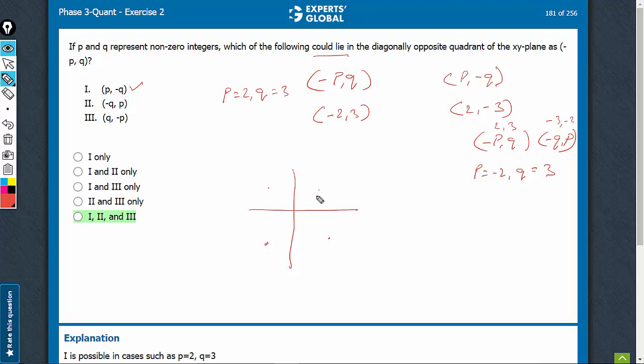(p, -q) will mean (-2, -3), both are negative. So, the fourth quadrant, or the third quadrant. And see, once again, these two are lying in the diagonally opposite quadrants. So, this is also possible.